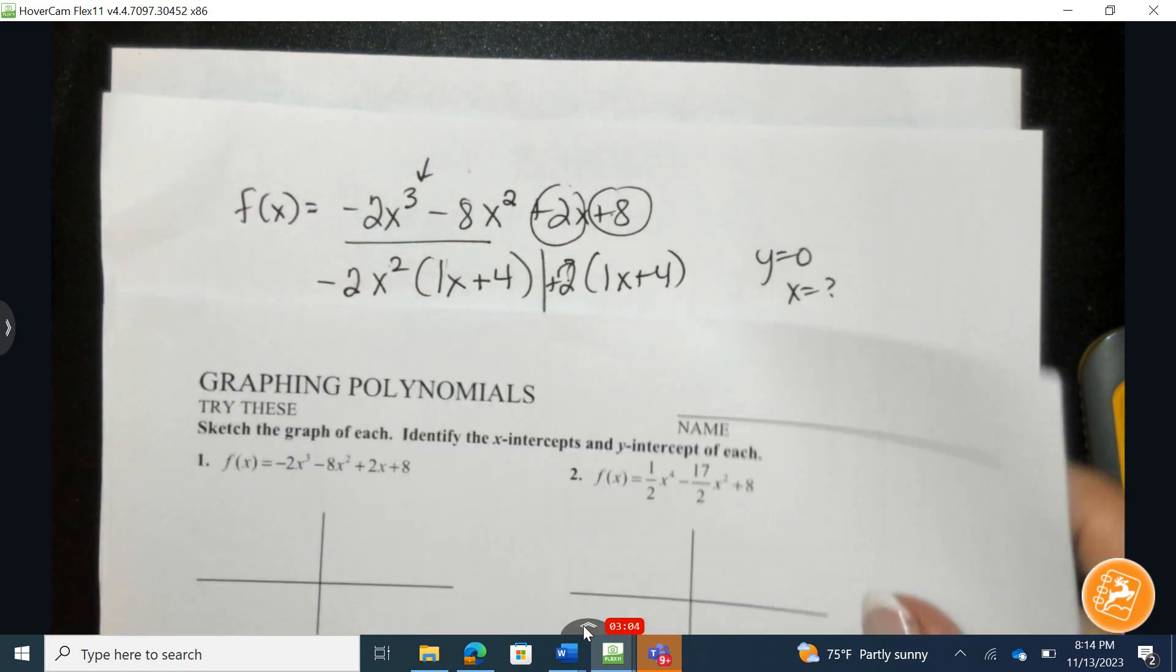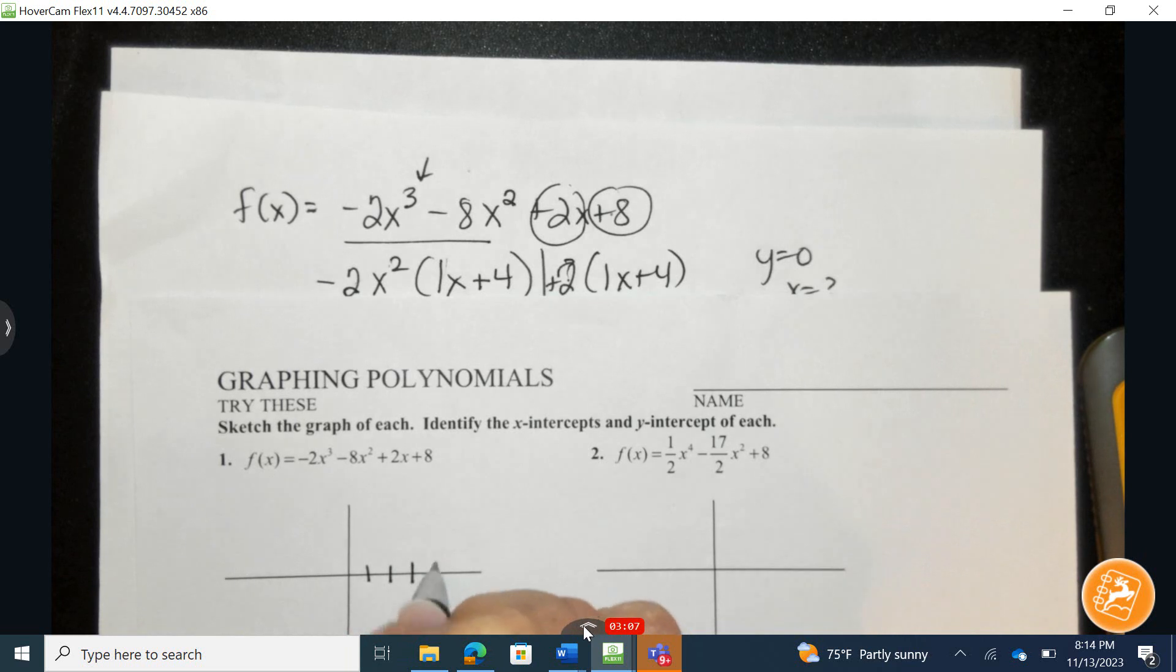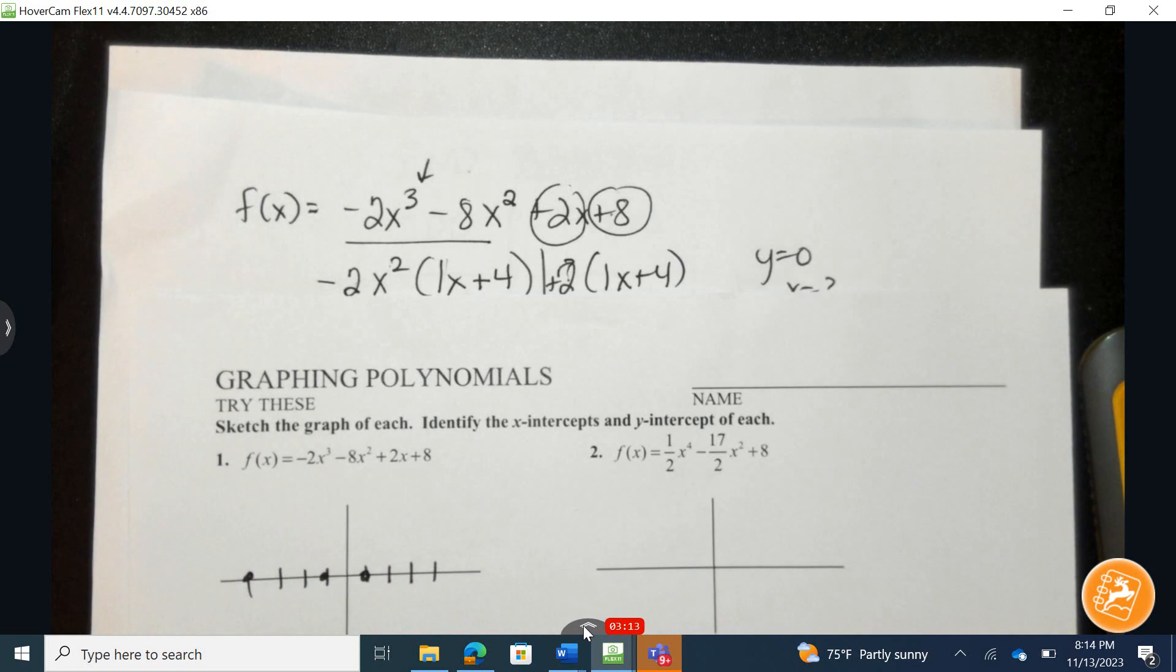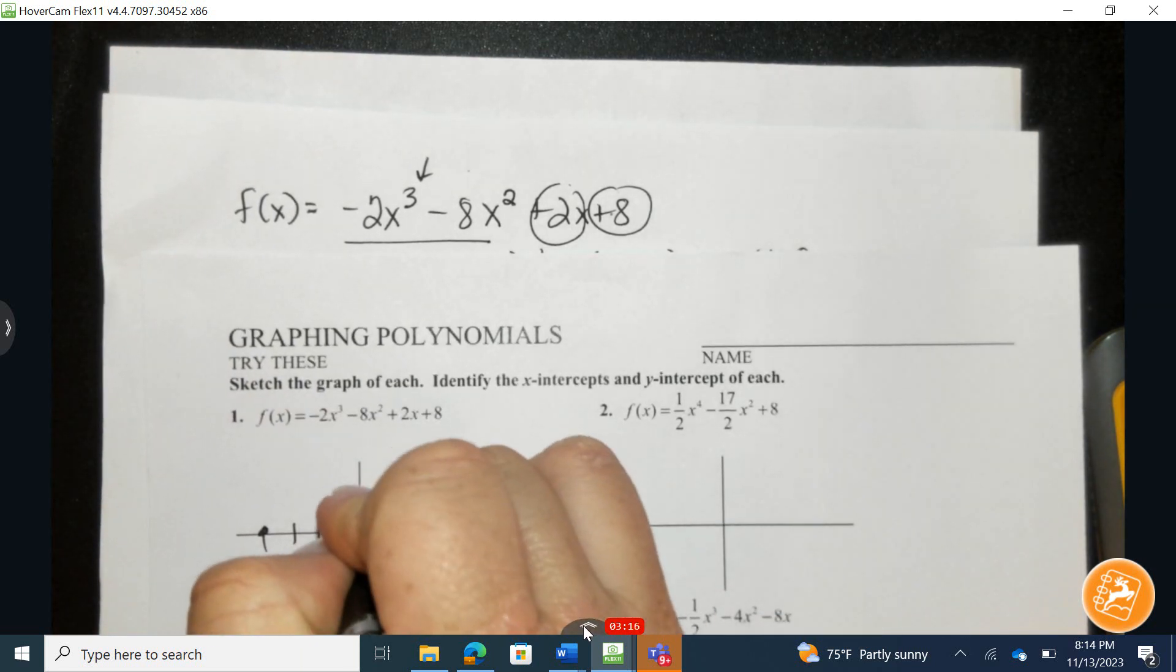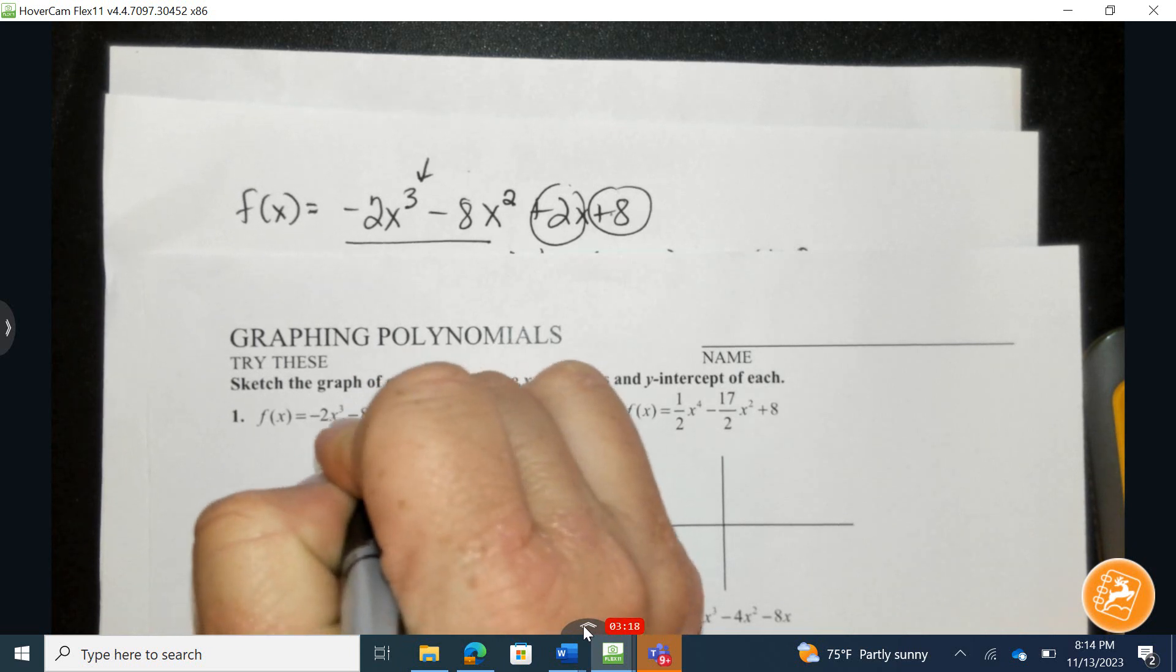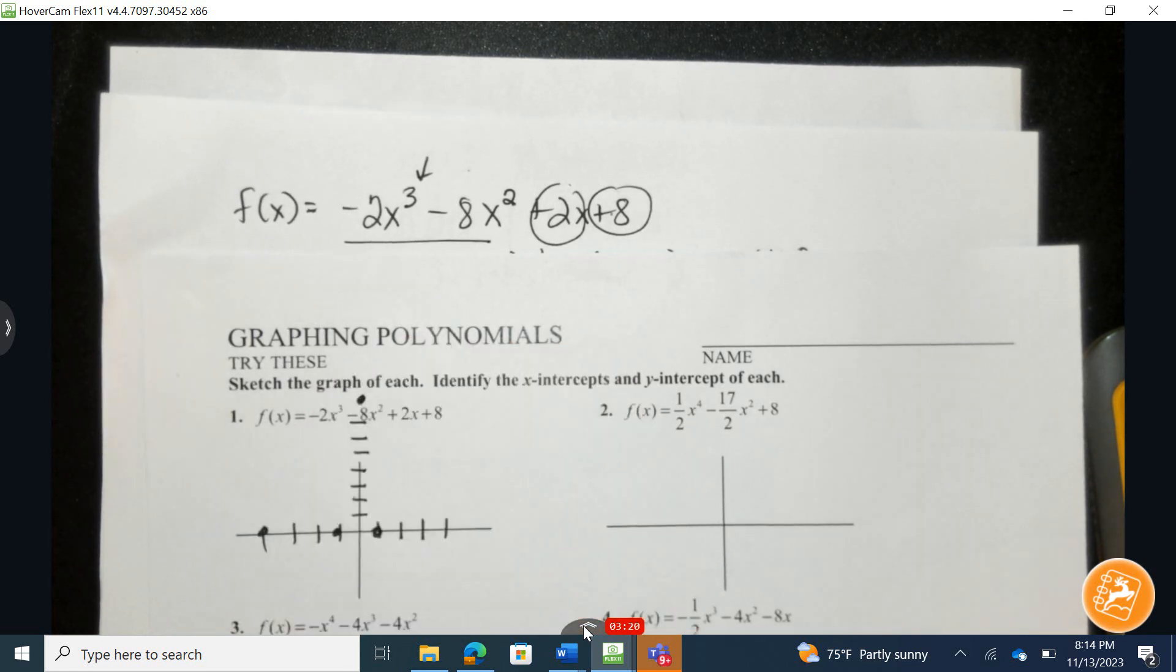Positive and negative 1 and negative 4. I can see that my y-intercept is at 8. So somewhere right in here.